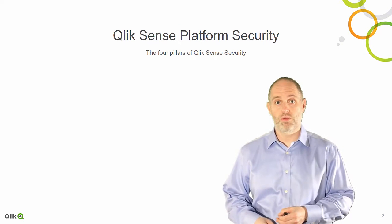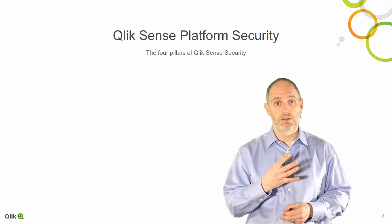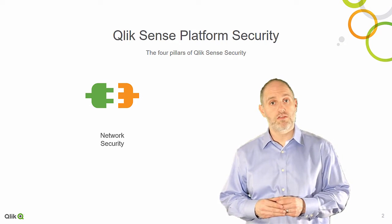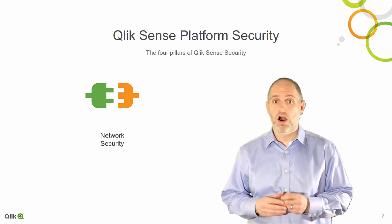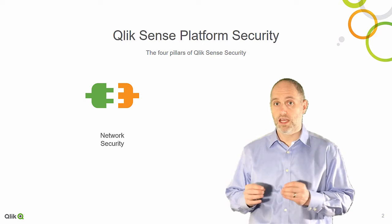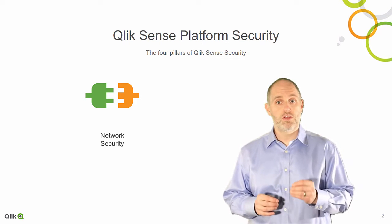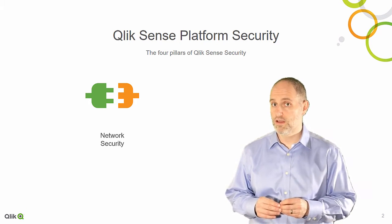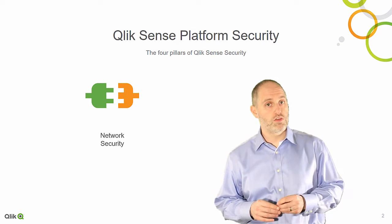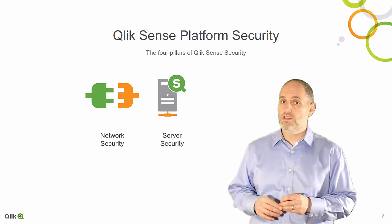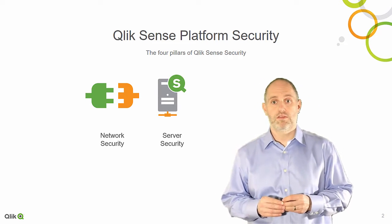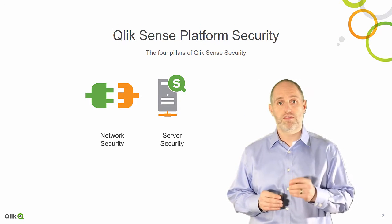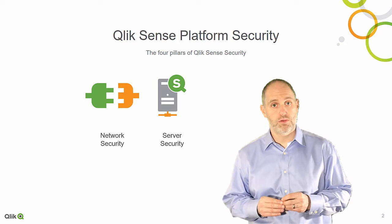Qlik Sense platform security rests on four pillars. Network security protects the communication between Qlik Sense services and web clients. All communication between the client and server uses digital certificates to encrypt information during a user's Qlik Sense session. To secure the server, Qlik Sense leverages the operating system to protect the platform, allowing only authorized users processing access to required resources.